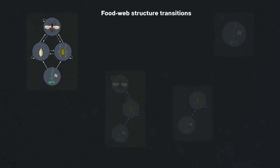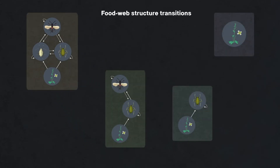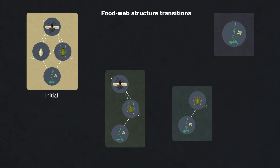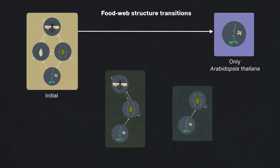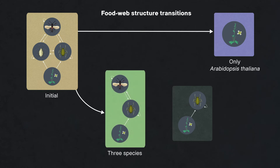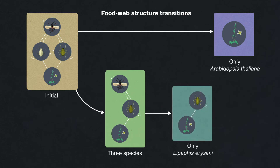To understand how variation at AOP2 determined food web persistence, we analyzed its role in determining transitions in food web structure. We found that the initial food web underwent a transition where either all insects went extinct, or more commonly into a three-species food chain with Lipaphis erysimi. This remaining food chain either persisted for the duration of the experiment or transitioned into either an aphid-only food web or Arabidopsis-only state.